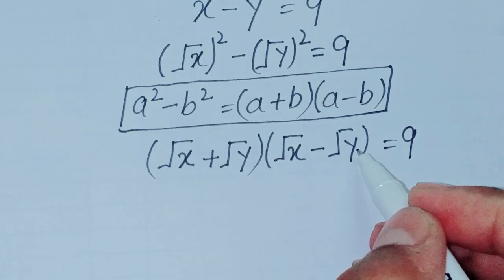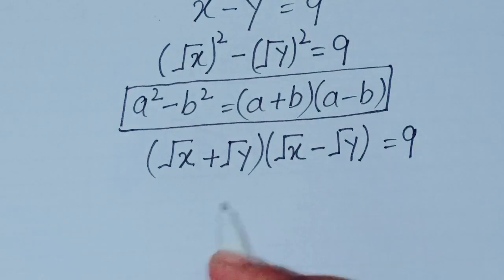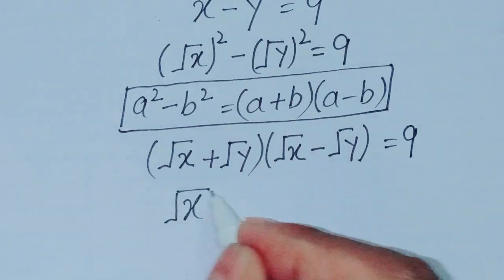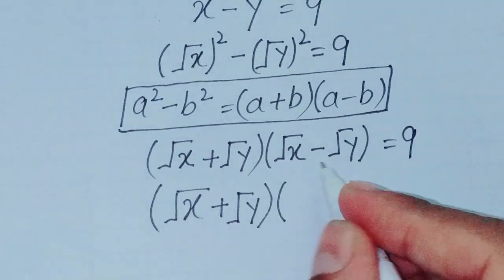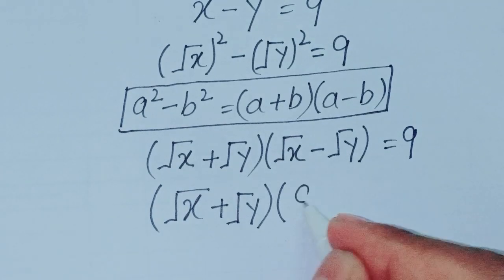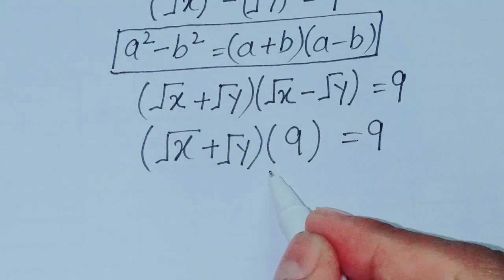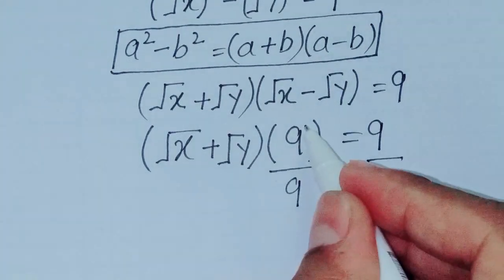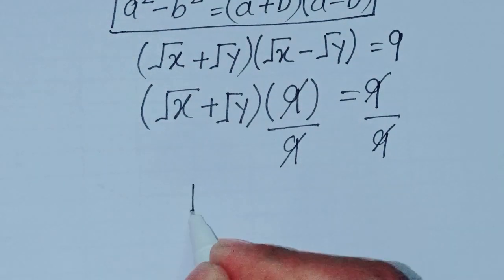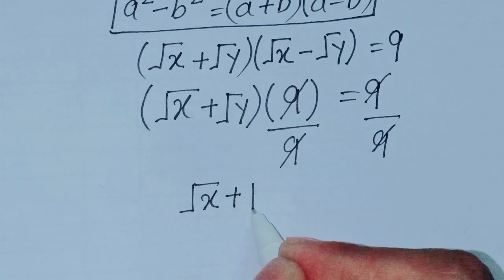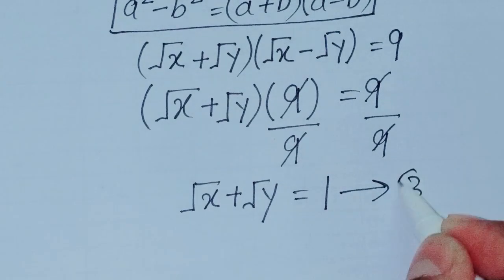Now, square root of x minus square root of y is given as 9 from equation 1, so we substitute that value. We get: square root of x plus square root of y, times 9, equals 9. Dividing both sides by 9, they cancel each other. So square root of x plus square root of y is equal to 1. This is equation 3.